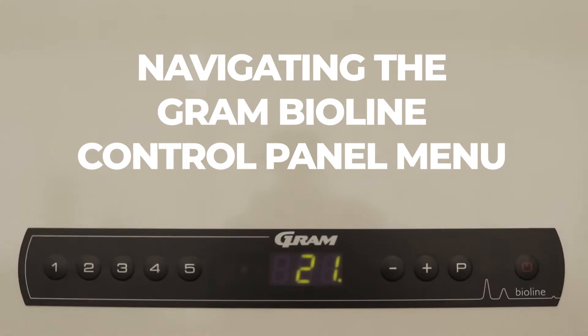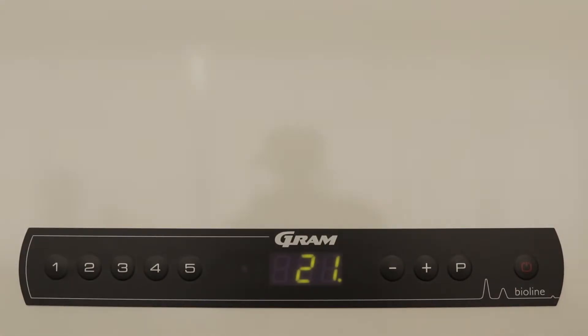Welcome to an all-round introduction to navigating the menu on your Gram Bi-Align control panel. To begin, it is important to know that the P, Plus, Minus, and Power buttons are used to navigate and select within the setup menu.